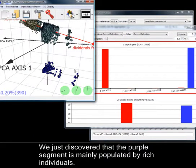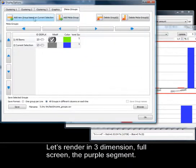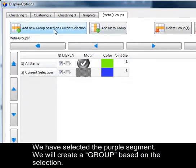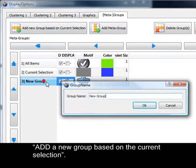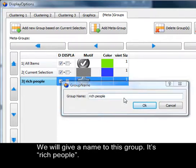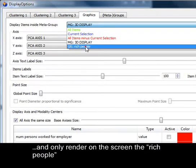We just discovered that the purple segment is mainly populated by rich individuals. Let's render in three-dimensional full screen the purple segment. We have selected the purple segment. We will create a group based on the selection. Groups allow you to configure the 3D display. Let's create a new group based on the selection. Add a new group based on the current selection. We will give a name to this group. It's rich people.